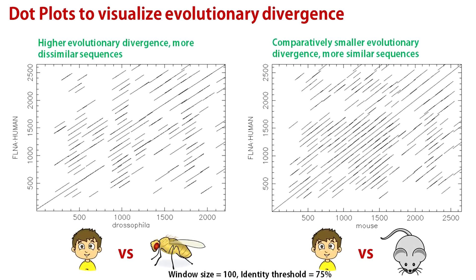The final point of our discussion is visualizing evolutionary divergence of protein sequences using dot plot. I have shown you two dot plots of philamine protein. One for human versus drosophila and another for human versus mouse, both for window size 100 and 75% identity threshold. You can see that human versus mouse comparison, both mammals, show much higher sequence similarity compared to that for human versus drosophila. As you can expect, higher sequence similarity is found for evolutionarily closely related species pairs.